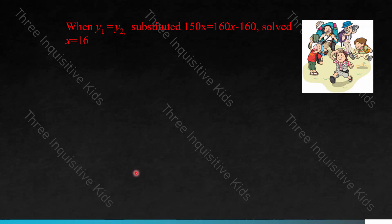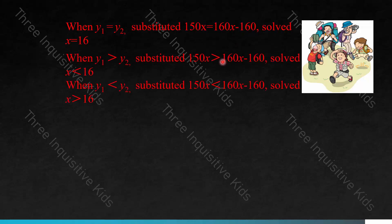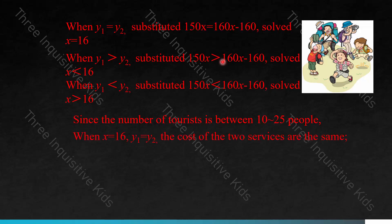Now we think about the different circumstances. When Y1 equals Y2, substituting gives 150X equals 160X minus 160. This is the step where we include the linear equation. Solving, X equals 16 — that is when the monthly cost of both services is the same.